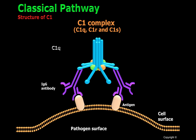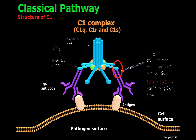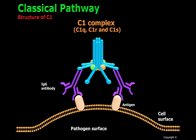C1-Q, shown in blue, has two main regions. One is the collagenous tails, that keep the characteristic structure of C1-Q together, and the globular heads, that are able to recognize the FC regions of antibodies. C1-Q can bind to different classes of immunoglobulins, but binds with stronger affinity to IgM and IgG3. The C1 complex has two molecules of C1-R and two molecules of C1-S that are bound to C1-Q. These molecules are serine proteases that are essential in the process of activation of the classical pathway.